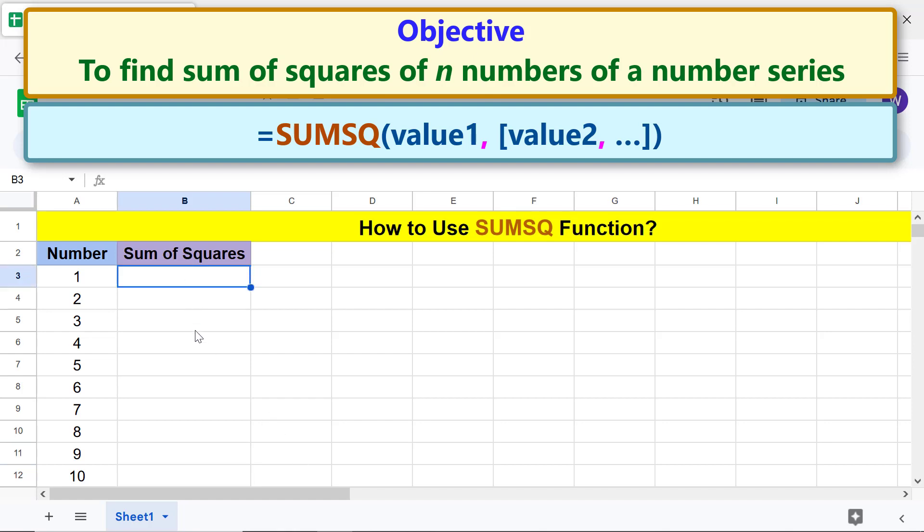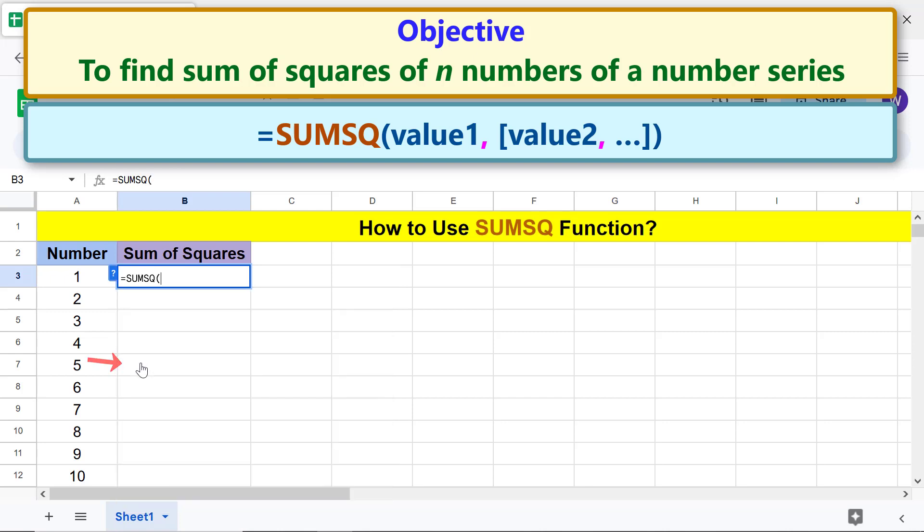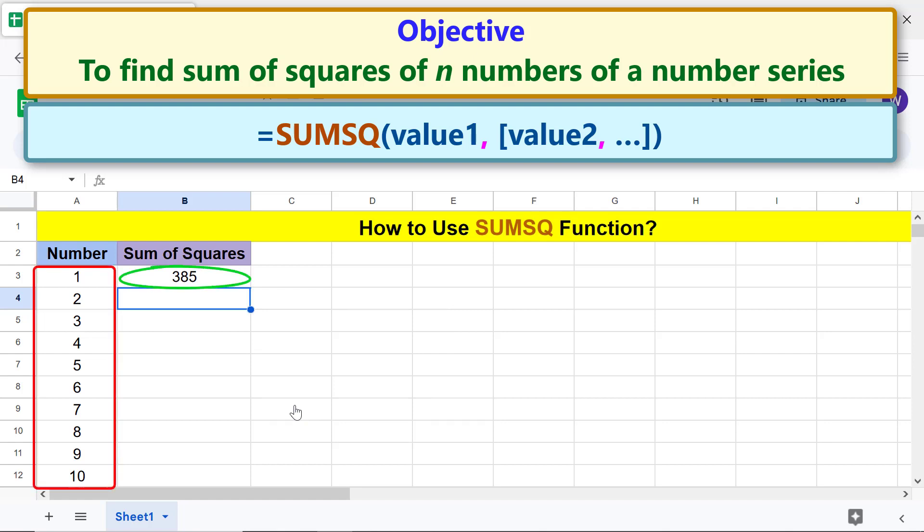All right, let's type the SUMSQ formula. First, type the equal to symbol, sum, and select SUMSQ. For value 1, select this range. Press enter. Cancel autofill as it does not apply in this case. There you go, SUMSQ has returned the sum of squares of these numbers.